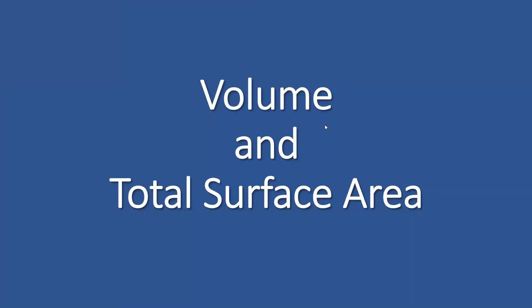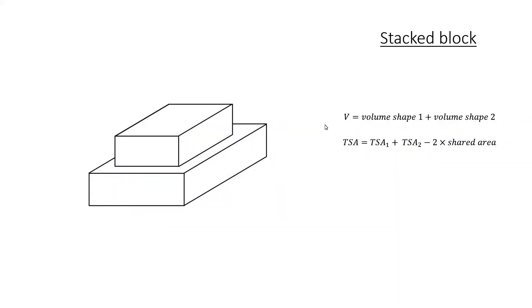We're looking at volume and total surface area for complex shapes. We're moving on to a new shape: the stacked block. With two blocks stacked on top of each other, they're not sharing a common base, so you can't take the area of the base times the height for the volume. You have to take the volume of the top block and the volume of the bottom block and add them together to get your total volume.